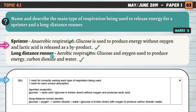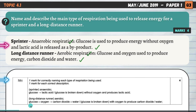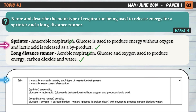For the long distance runner, we have aerobic respiration, where glucose and oxygen are used to produce energy, carbon dioxide, and water. Another way of describing that would be to write the equation: glucose plus oxygen equals carbon dioxide and water — and of course energy as well, which is the main product of respiration we're looking for.